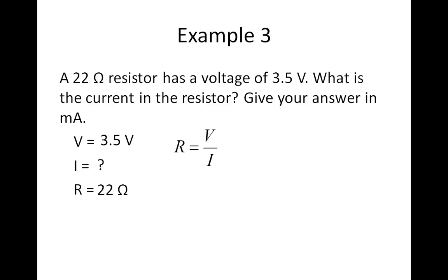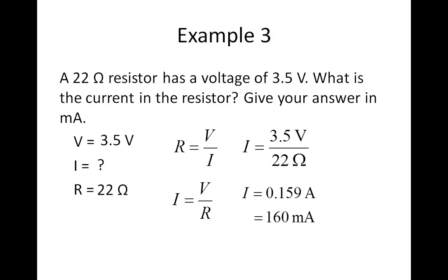Step one is to write the formula. I can start with R equals V over I, but this won't work directly to find I, so I rearrange it to I equals V over R. Plugging in my values: I equals 3.5 volts over 22 ohms, which gives 0.159 amps. I'll round it to 160 milliamps, because both 22 ohms and 3.5 volts are given to two significant digits, so my answer should also be two significant digits.